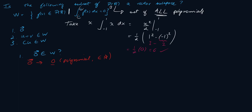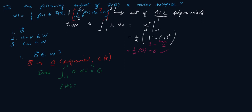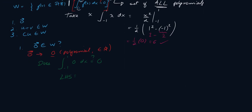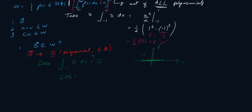To see if 0 belongs to W, we apply the condition — the integral — and check if it equals 0. Does the integral from minus 1 to 1 of 0 dx equal 0? An integral is the area under the curve. y = 0 is just the x-axis, and the area under 0 from minus 1 to 1 is of course 0. So the zero vector does belong to W.